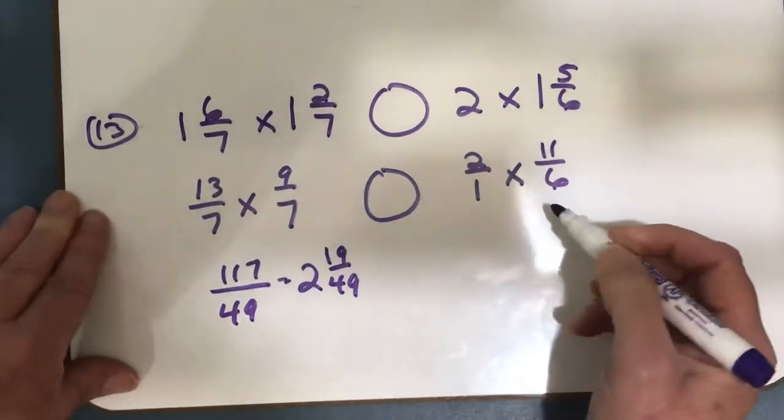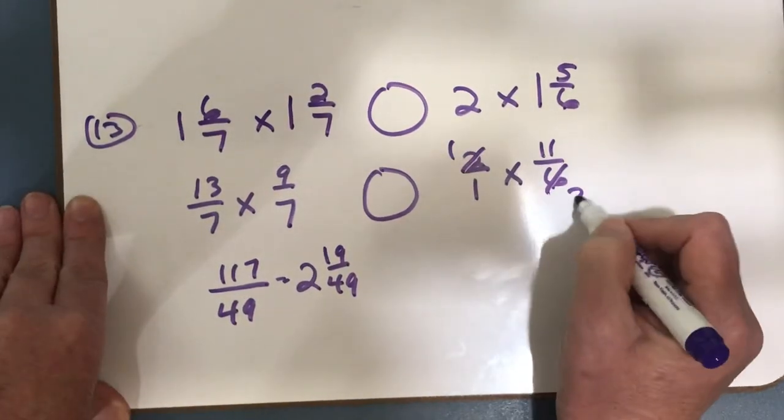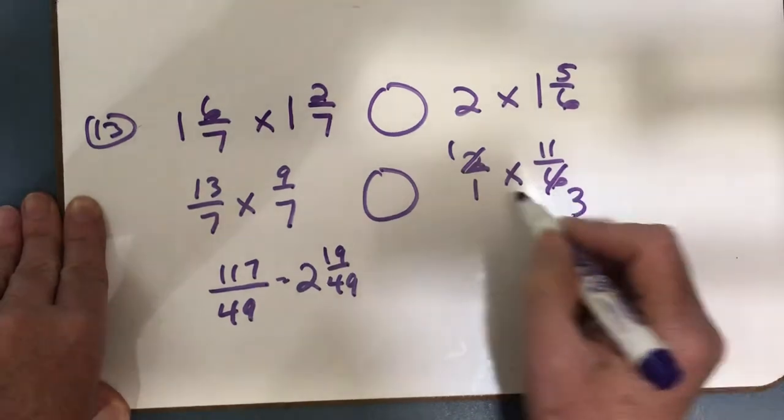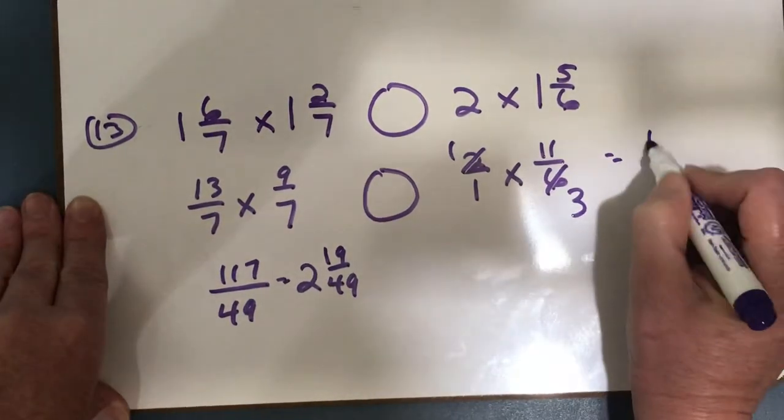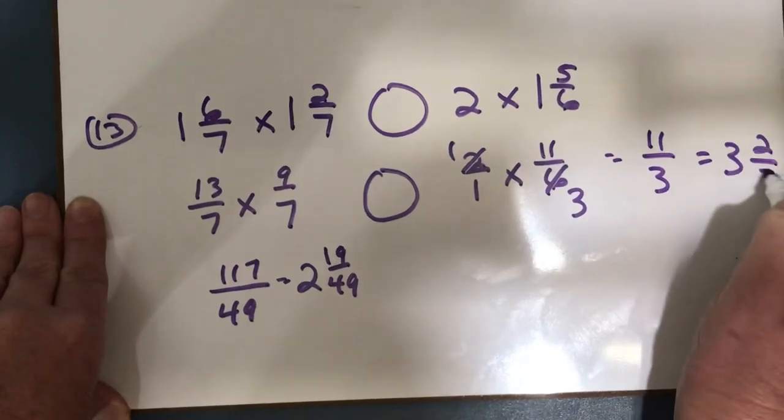Now I'll come over here. And I can simplify a little bit here. 2 goes into 2 once, 2 goes into 6 three times. So then I multiply, I get 11 thirds, which equals 3 and 2 thirds.